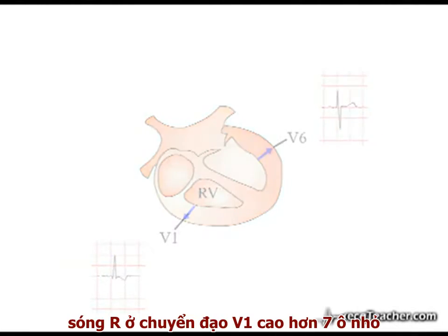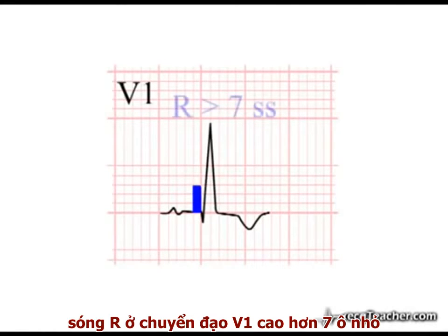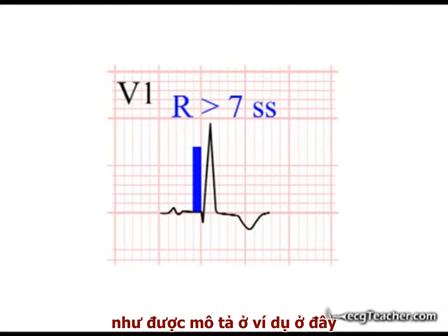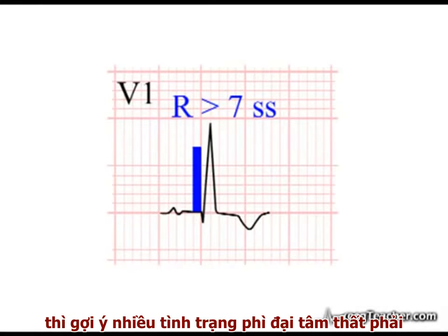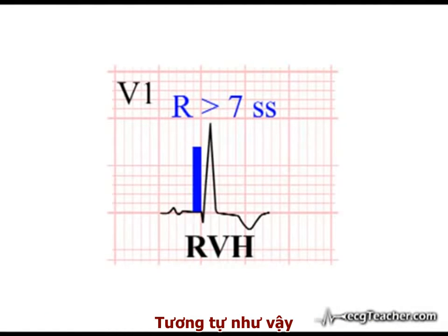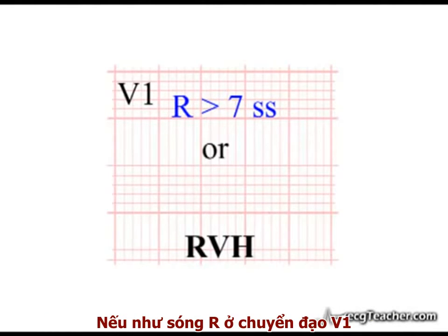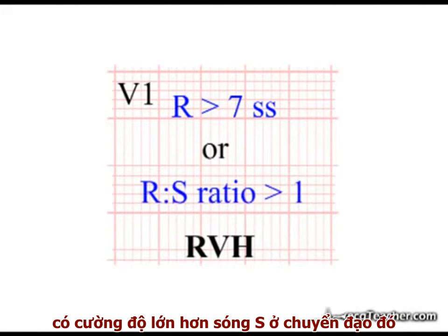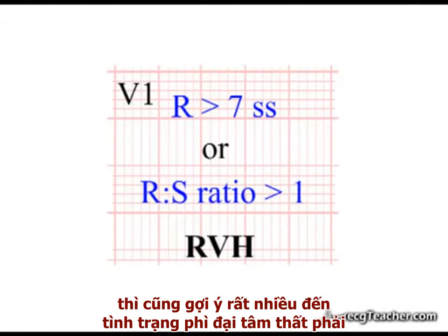In fact, an R wave in lead V1 higher than seven small squares in amplitude, as illustrated in the example shown here, is highly suggestive of the presence of underlying RVH. Equally, if the R wave in lead V1 is higher in amplitude than the S wave in that lead, this is also strongly suggestive of underlying hypertrophy.